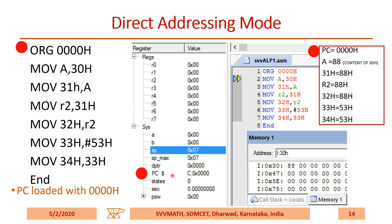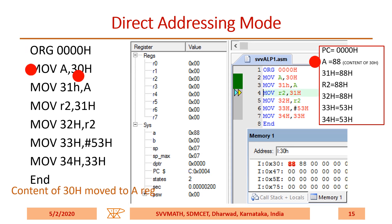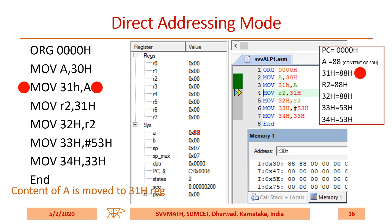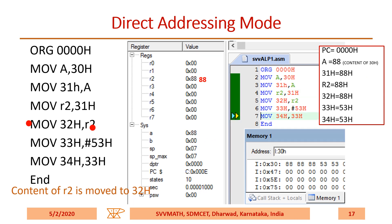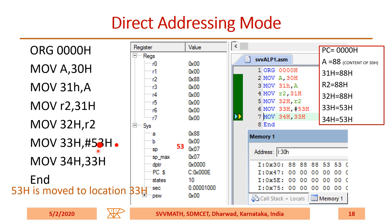When you execute ORG 000H, PC becomes 000H — execution will start from here. When MOV A, 30H is executed, the 30H content will move to the accumulator. When MOV 31H, A is executed, the content of A is moved to location 31H. When MOV 32H, R2 is executed, the content of R2 is moved to location 32H — observe the animation. When MOV 33H, #53H is executed, 53H is moved to location 33H. When MOV 34H, 33H is executed, the content of 33H is moved to location 34H.